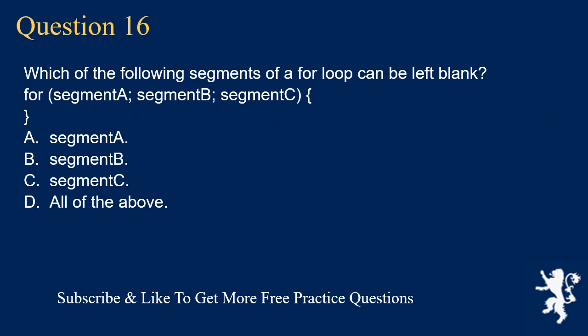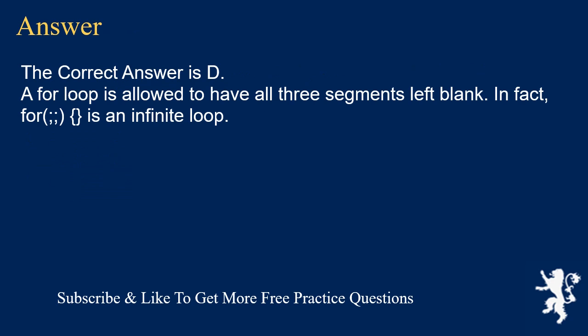Question 16. Which of the following segments of a for loop can be left blank? A for loop has three segments: initialization, condition, and update. A. Segment A. B. Segment B. C. Segment C. D. All of the above. The correct answer is D. A for loop is allowed to have all three segments left blank. In fact, for (;;) is an infinite loop.